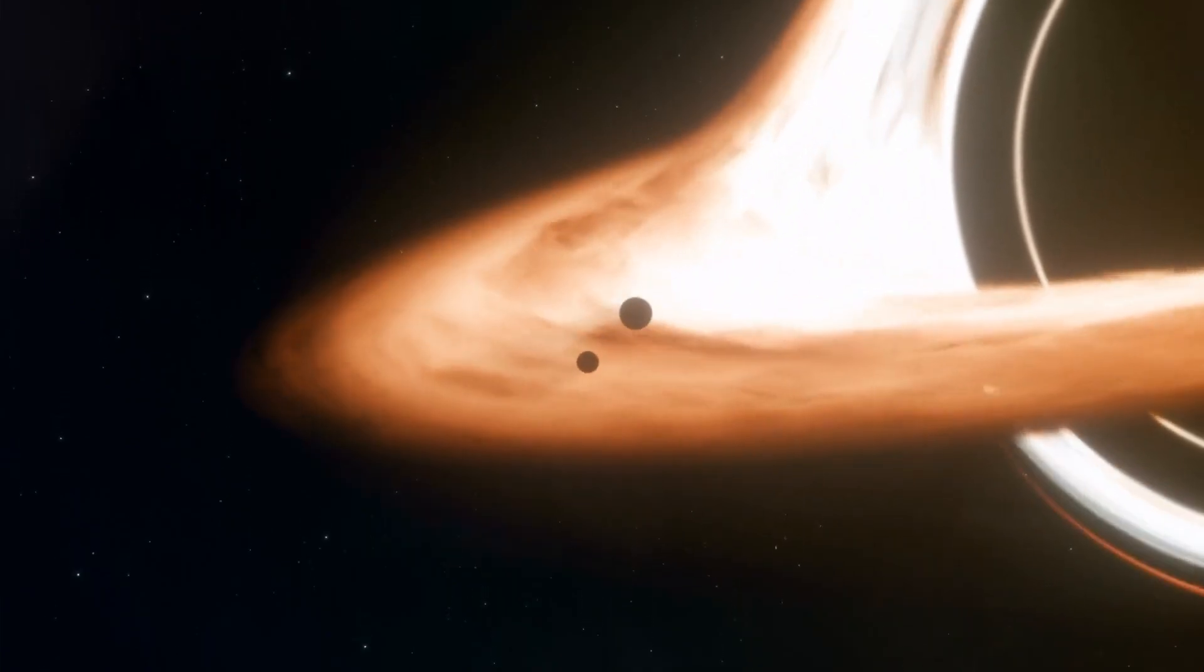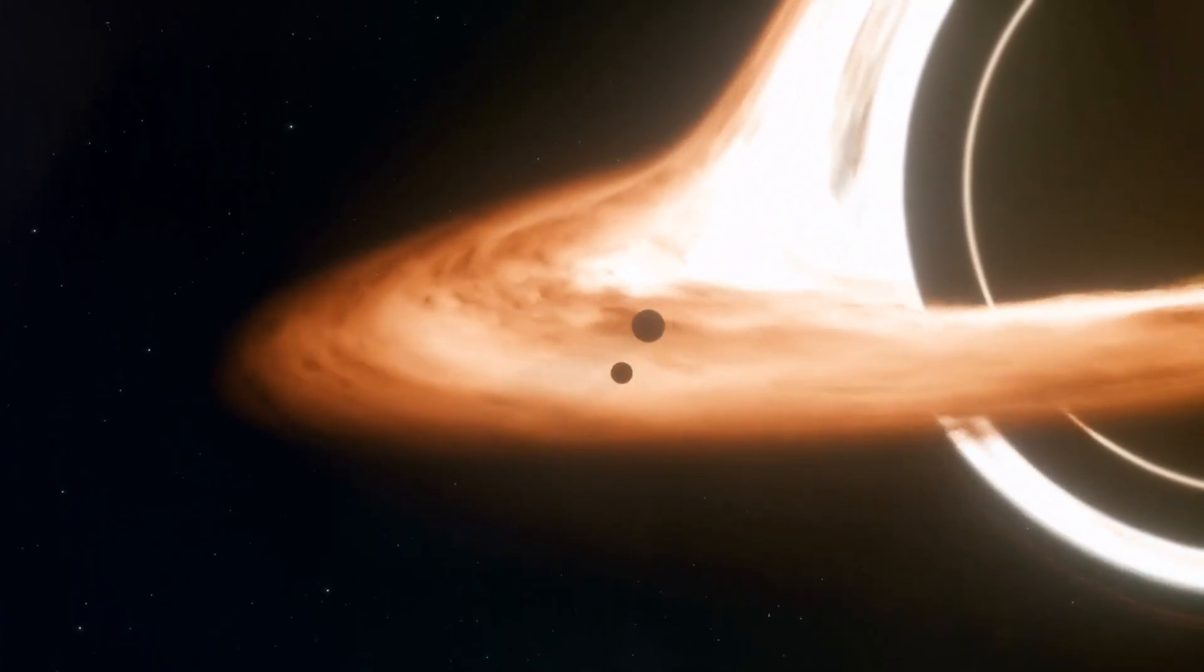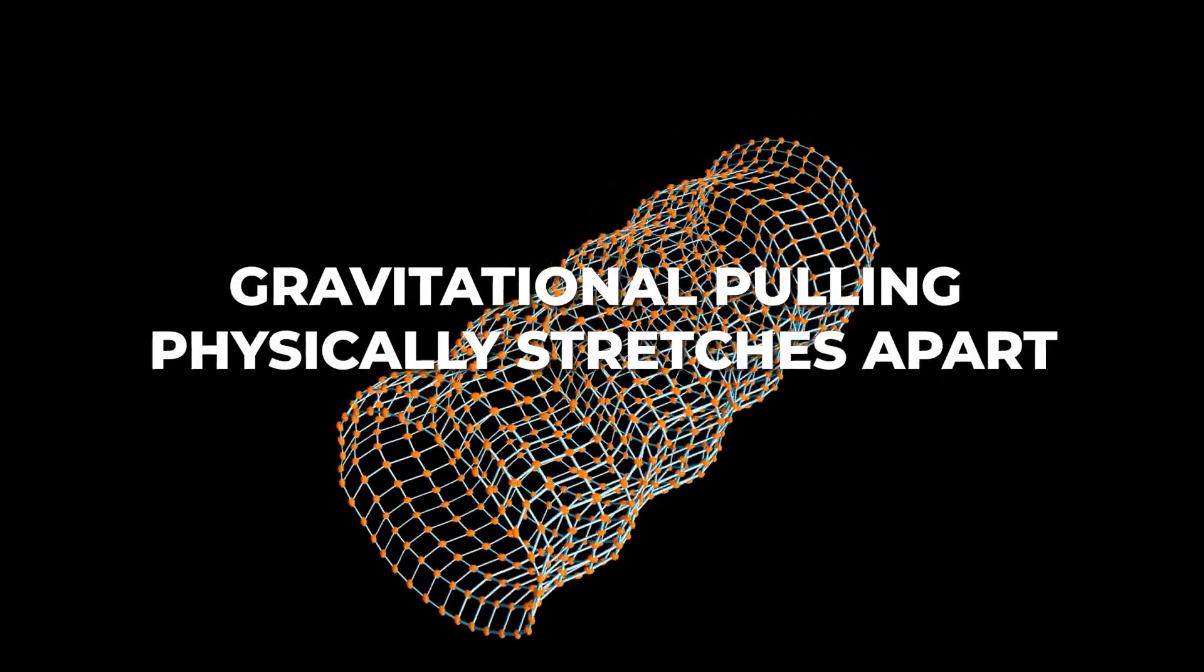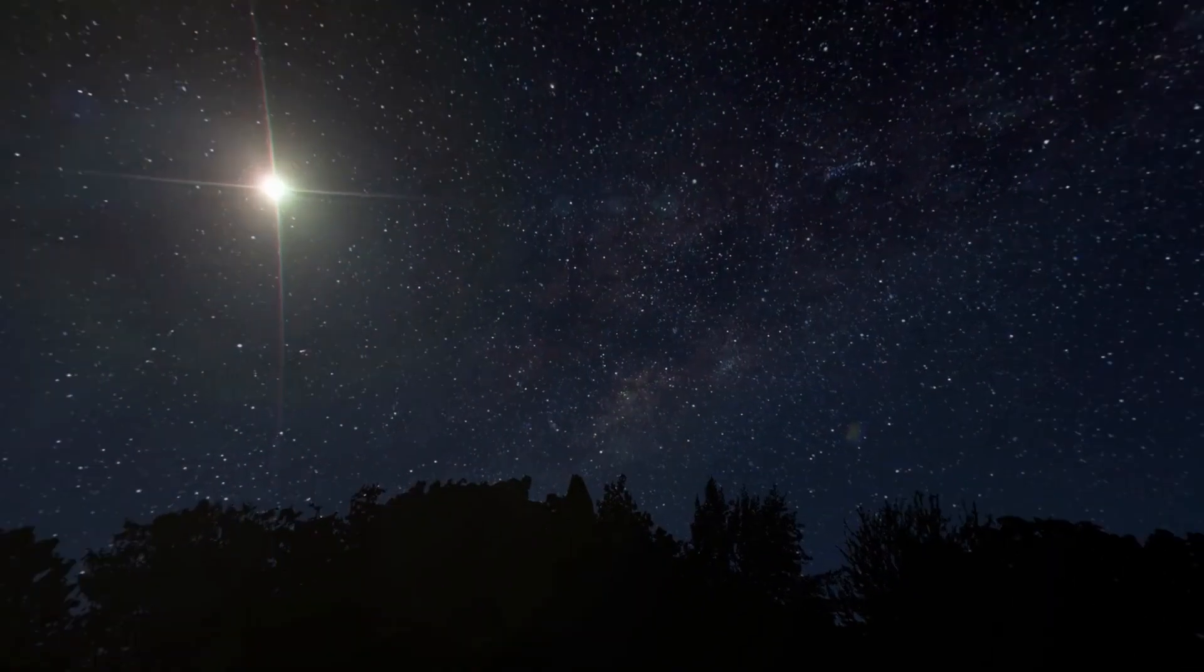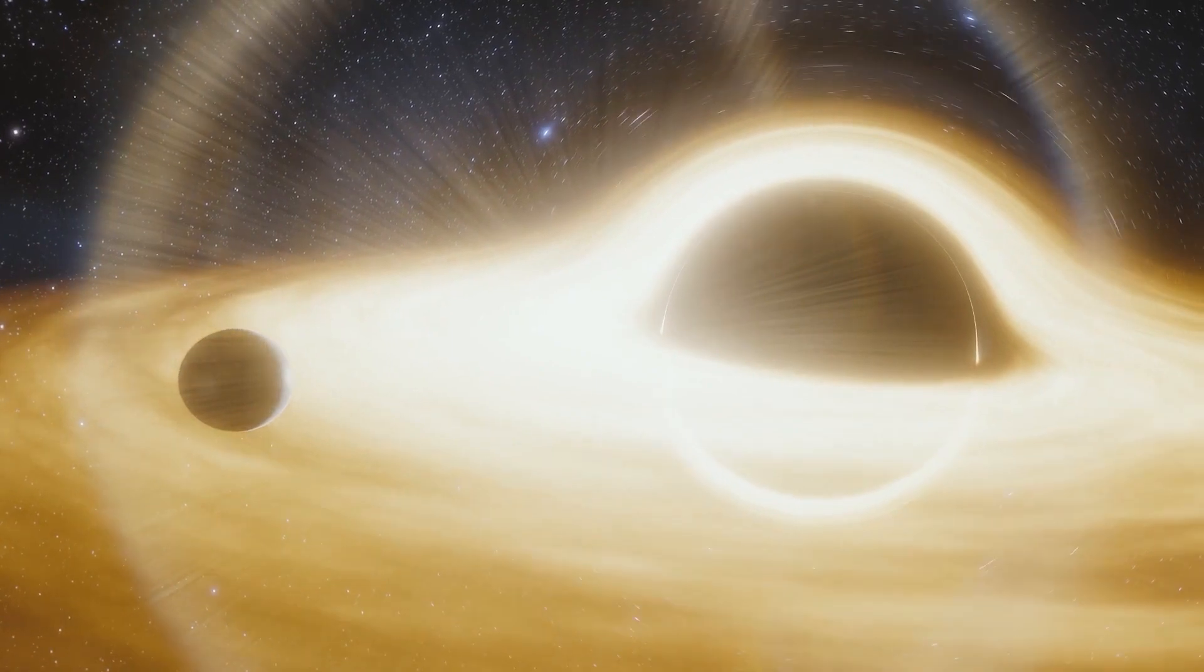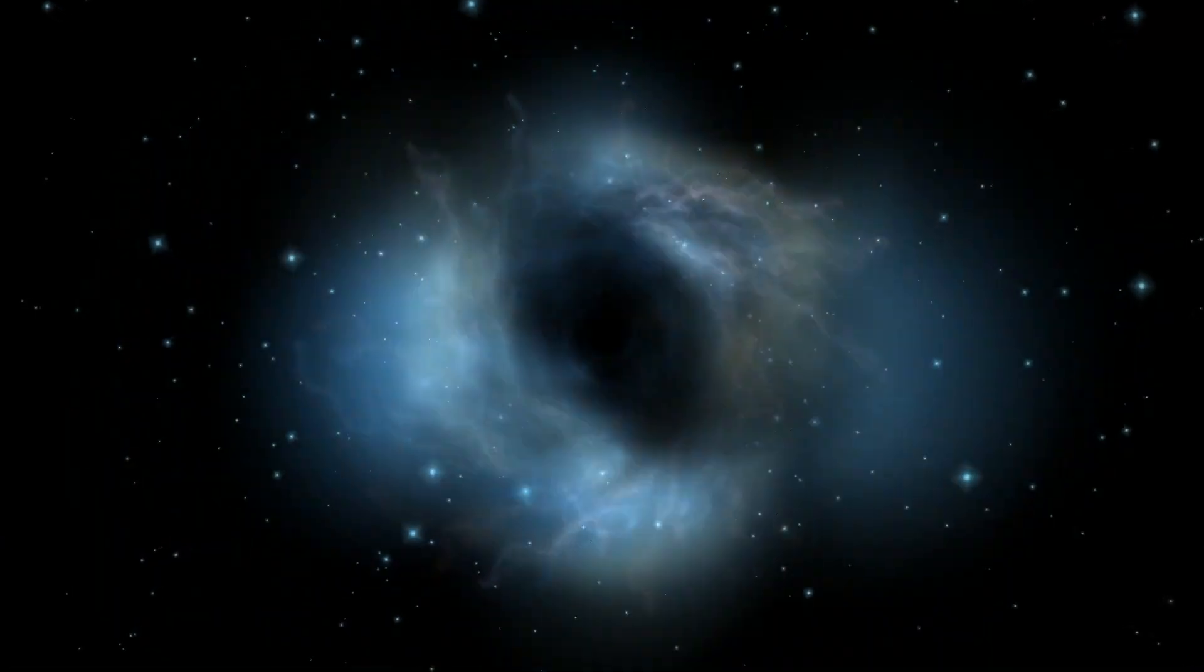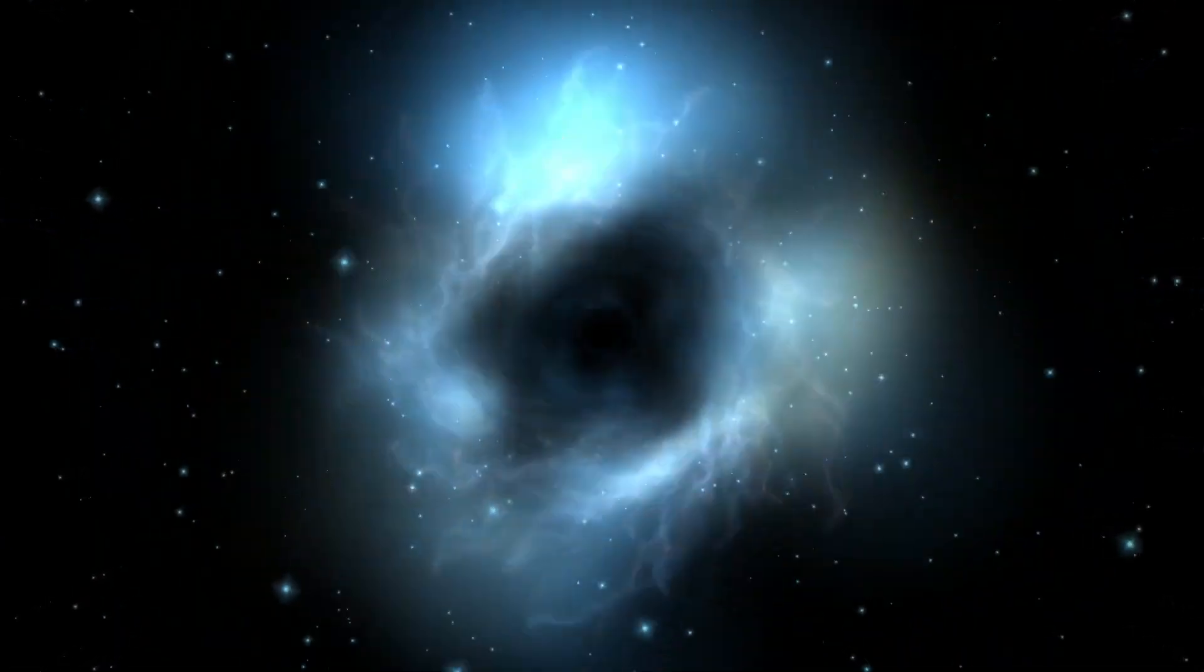However, when matter approaches a black hole, things get intense. Gravitational pulling physically stretches apart or spaghettifies object-like stars. The material accumulates in a ring known as an accretion disk, where it spins fast and is superheated to millions of degrees.